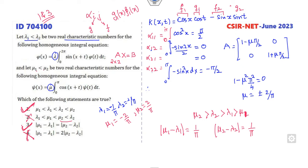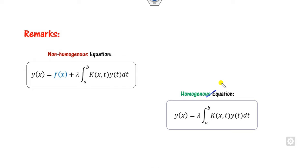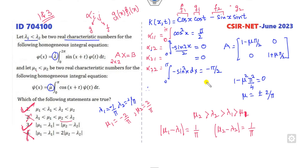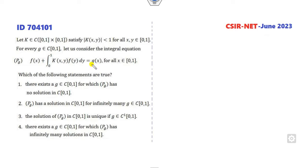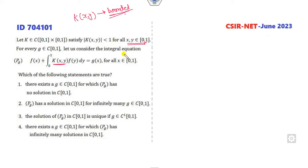Remember, the key trick is to always write in terms of Ax = b where A is the matrix corresponding to the kernel. Now look at one more example where k is not explicitly given, but the property is that k is strictly less than 1 and x and y are in [0,1], meaning k(x,y) is a bounded function. The question asks: does there exist a function g such that this equation has no solution?